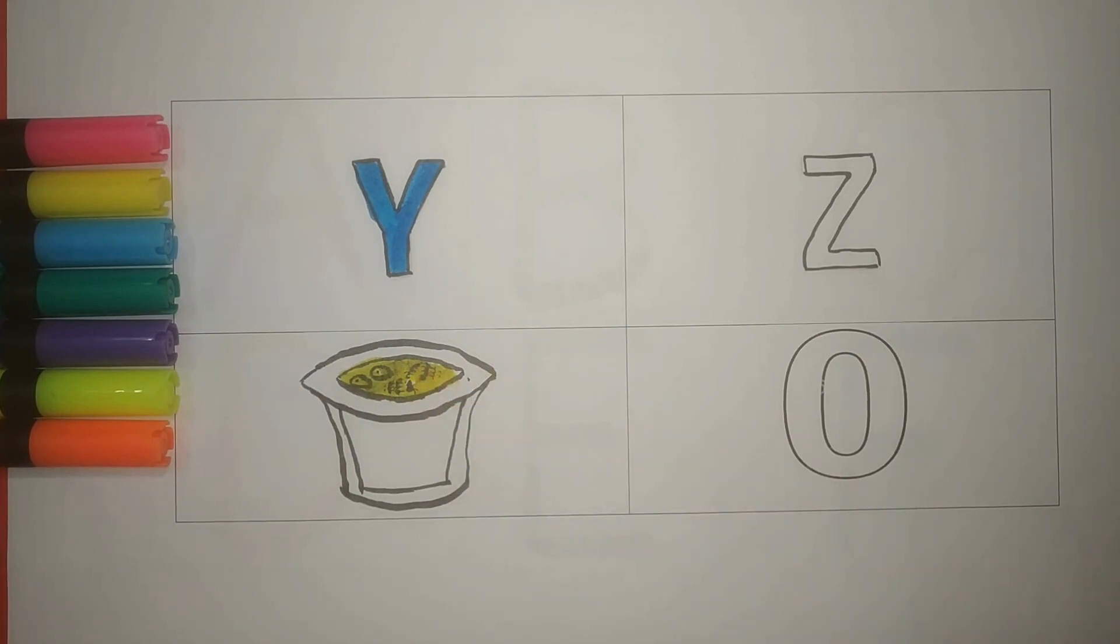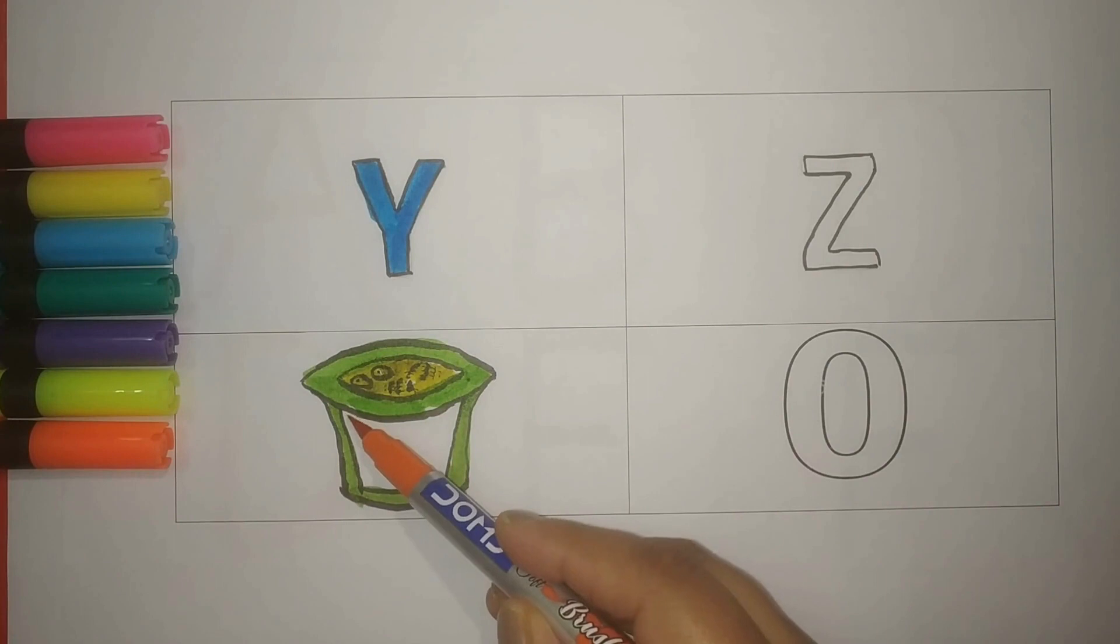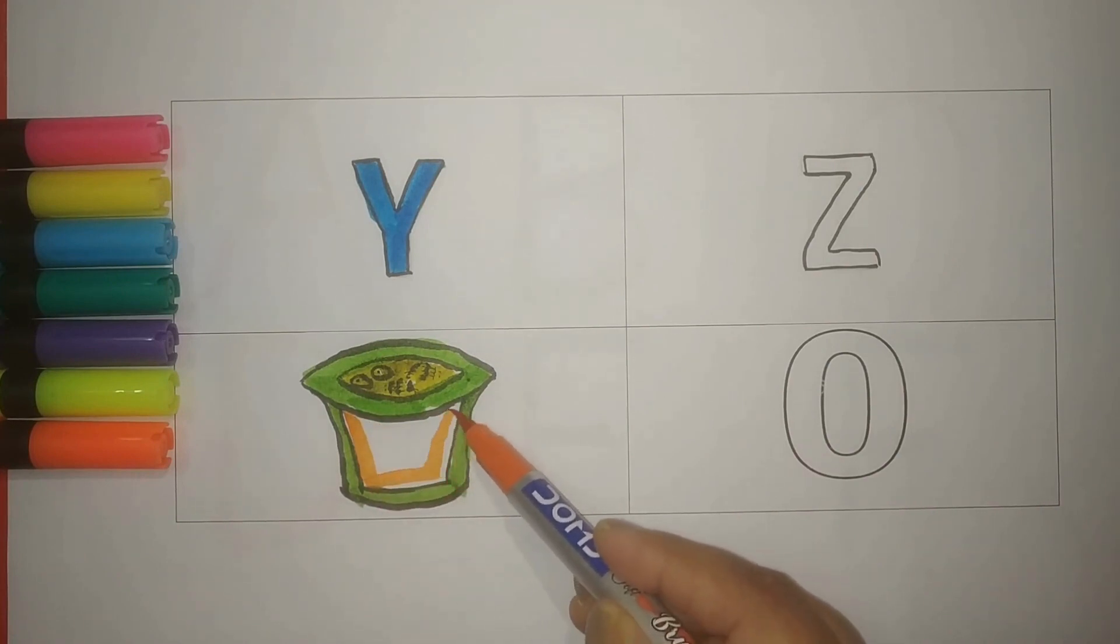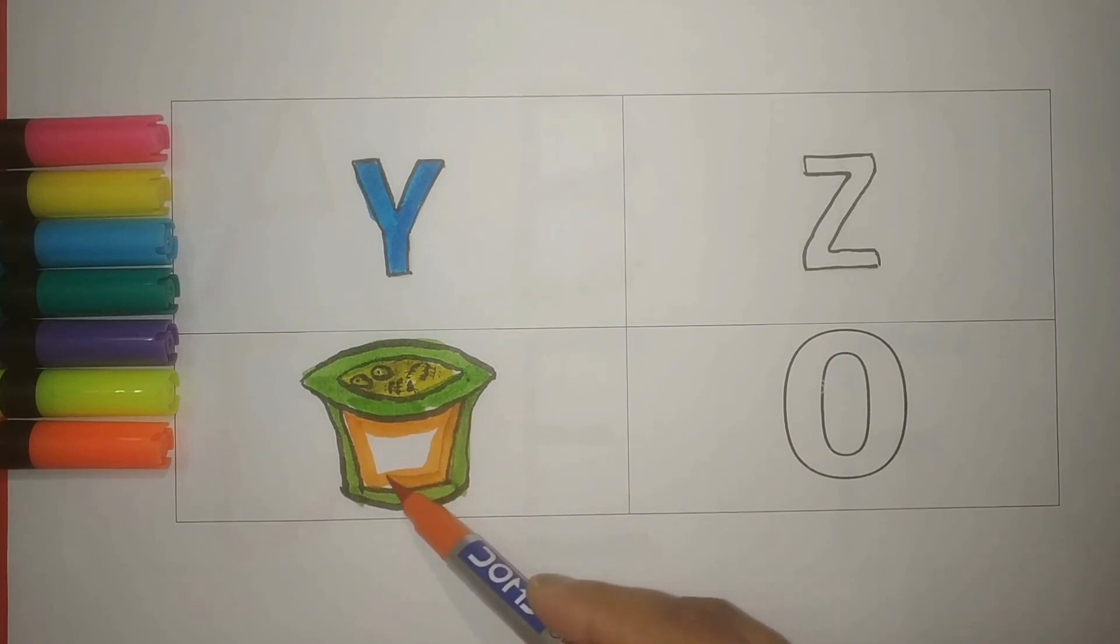Yellow color. Green color. Y for yogurt. Green color. Y for yogurt. Orange color. Y for yogurt, Y for yam.